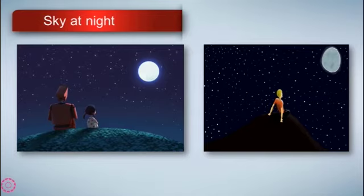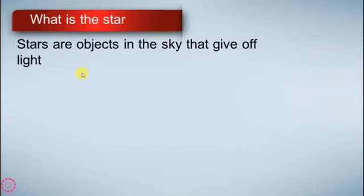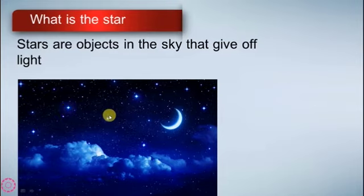We can see many things like stars and the moon. The moon is brightening and there are very far away stars. What is a star? Stars are objects in the sky that give off light. This is the wonderful shining of the moon and stars at night.